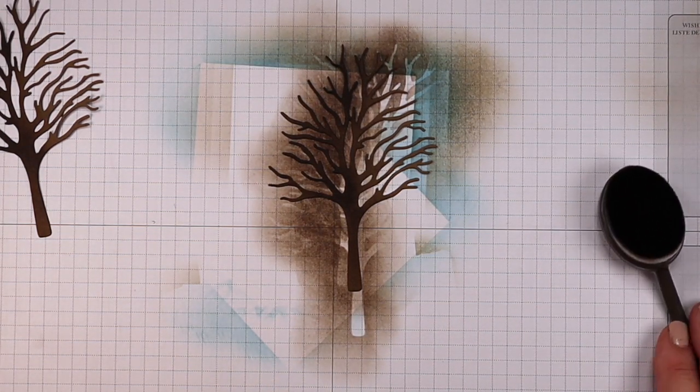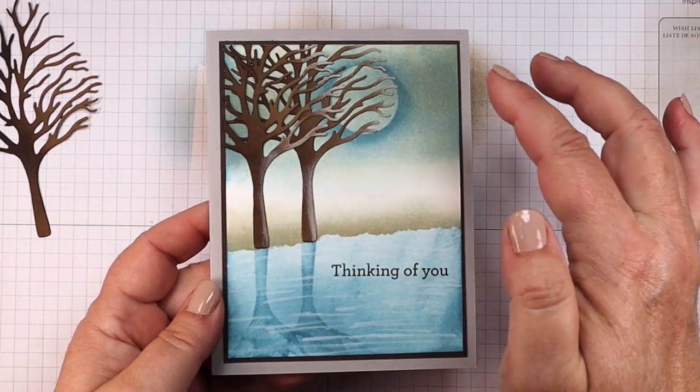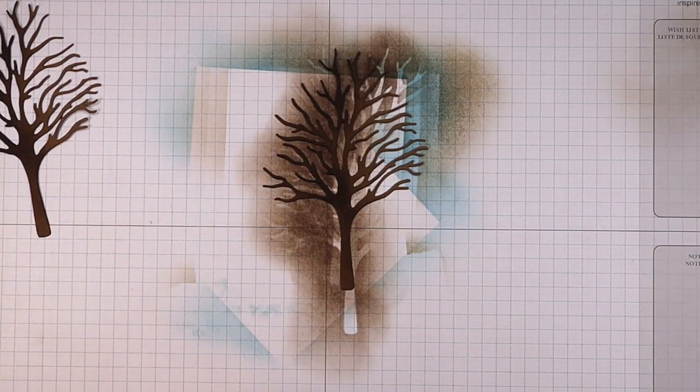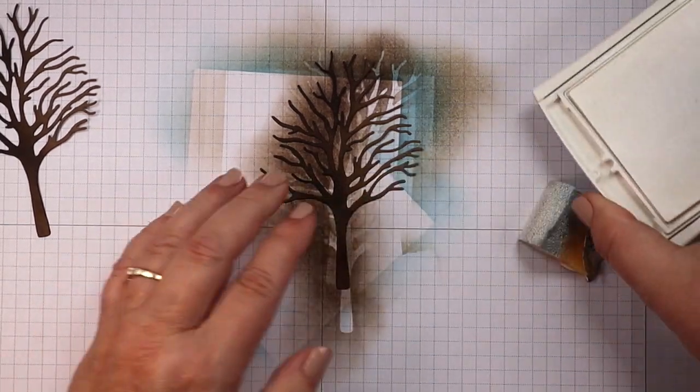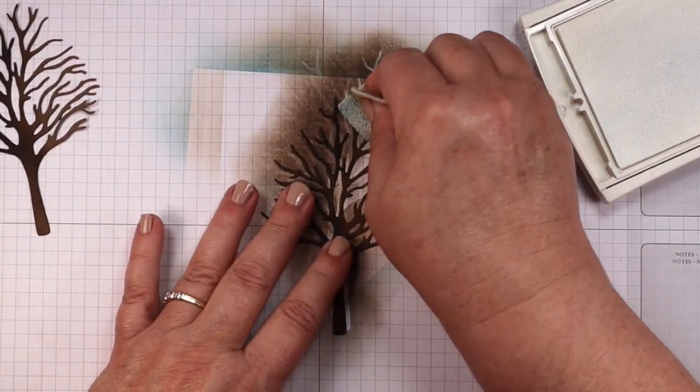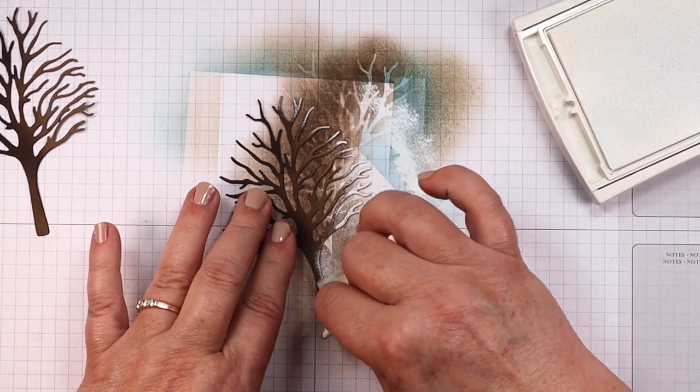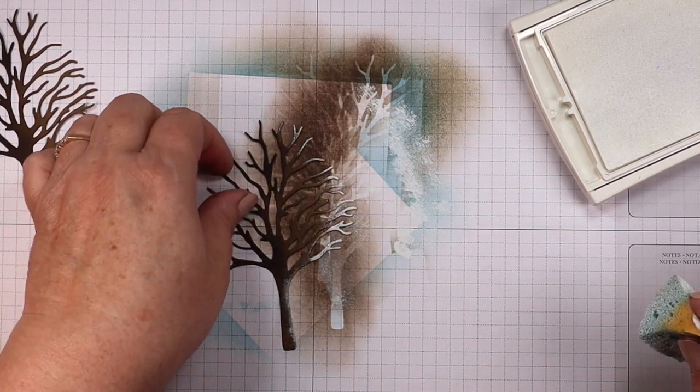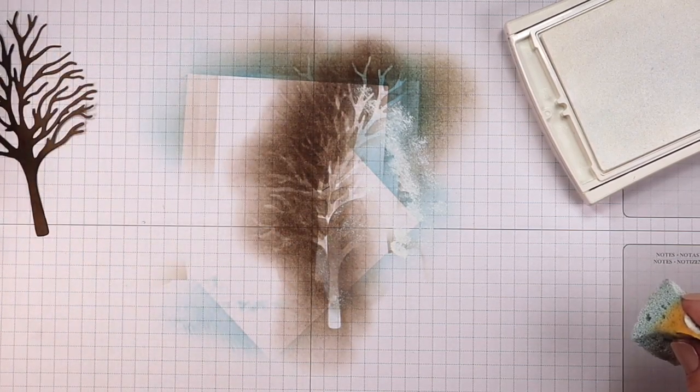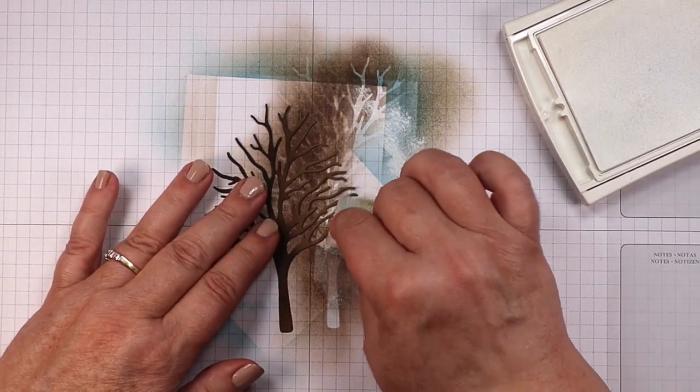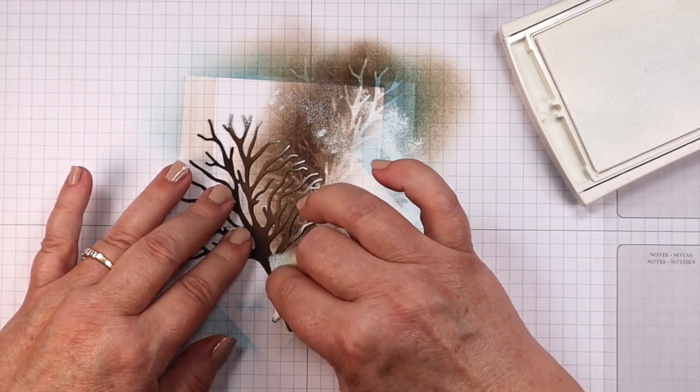And I want some light highlights on the very tips of my branches and down on the right side of my trees. So we're going to just take a sponge, just a piece of a sponge and some whisper white ink, and I'm going to pounce this on the edges of my branches here and just put a little bit down that tree trunk so we have some nice light edges on those. I'm going to repeat for my second tree. It's a quick way to get some highlights.